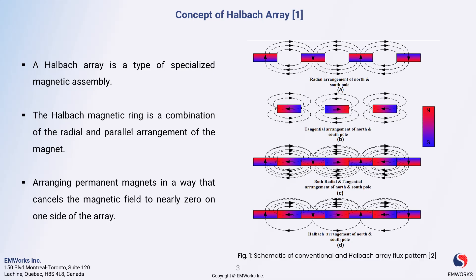At its core, a halbach array is a specialized magnetic assembly designed to enhance the magnetic field on one side while canceling it on the opposite side. This unique arrangement allows for more efficient use of magnetic materials. To visualize this, think about the halbach magnetic ring — it combines two key arrangements: the radial and parallel configurations of magnets.